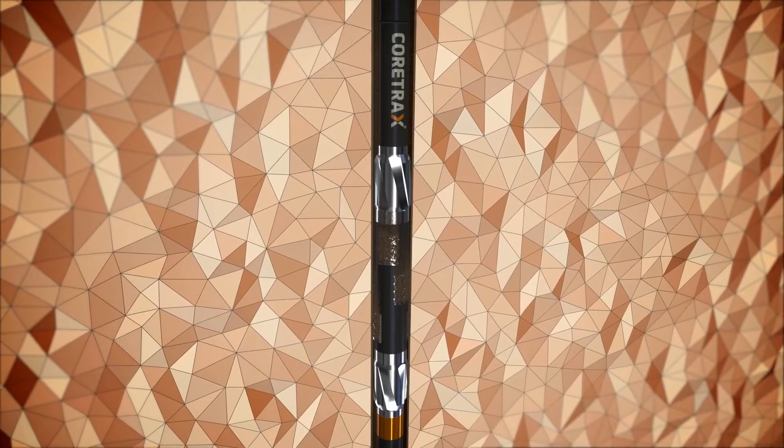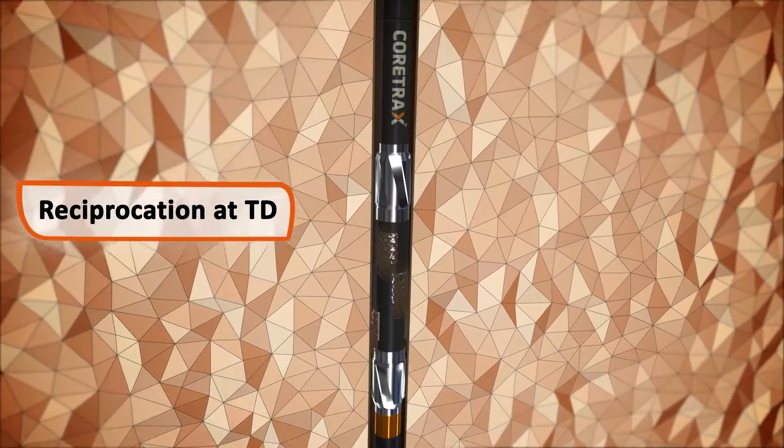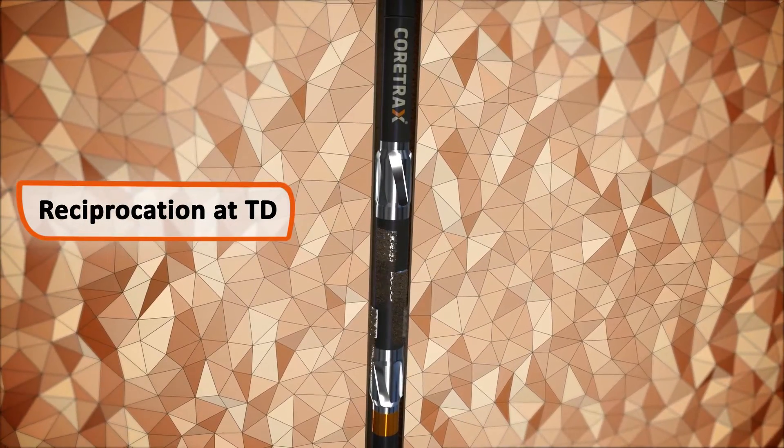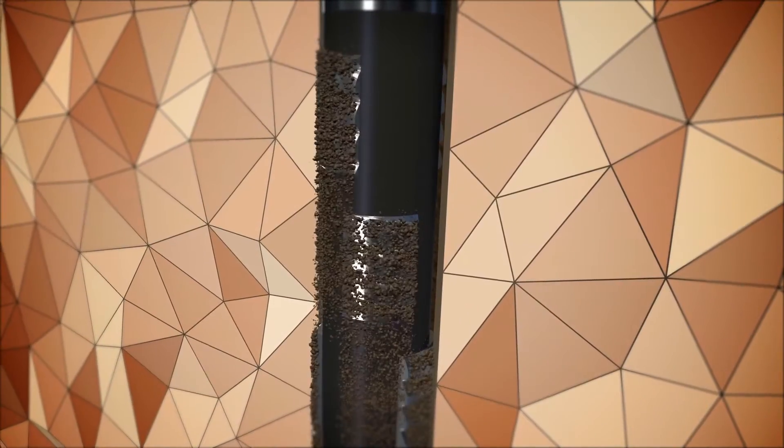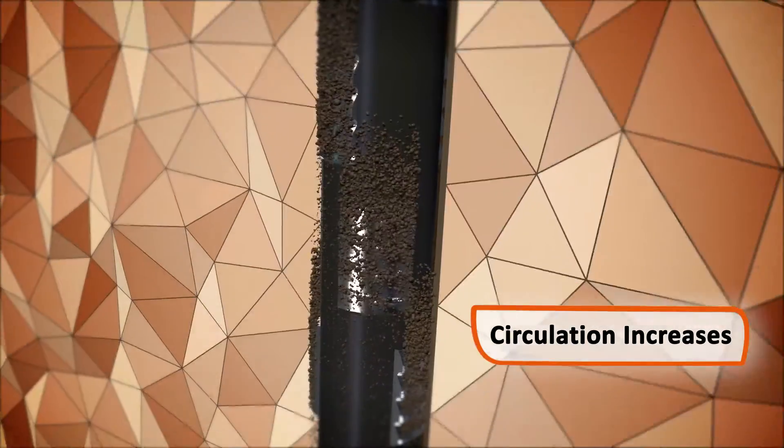On arrival at TD, the tools begin to reciprocate and rotate to remove scale and cement from the casing. With the packer setting areas now clean, circulation is increased to condition the mud.